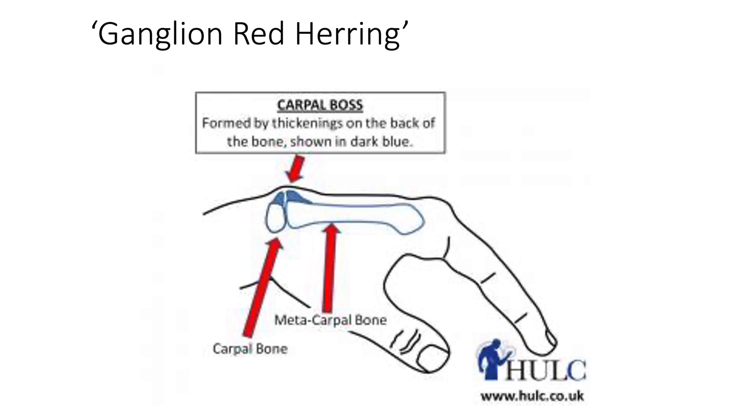One ganglion red herring worth mentioning: occasionally a lump on the back of the wrist looks like a ganglion but feels bony — and actually is bony. On X-ray you'll see a carpal boss or metacarpal boss: bony thickenings on the joint margins. It tends to occur in young females. A helpful clinical test: the lump sits much more prominent in wrist flexion, feeling firm, but in neutral or extension it seems to sink down and almost vanish. X-ray confirms the diagnosis. These are generally reassured and left alone — the only treatment is surgical chiselling off.